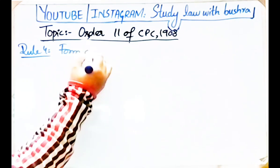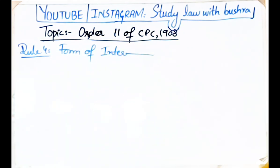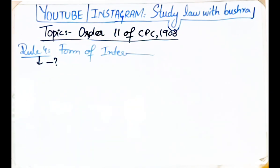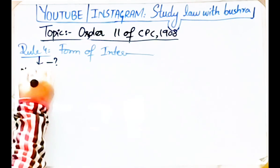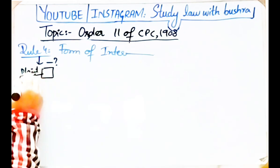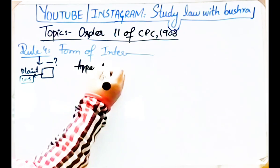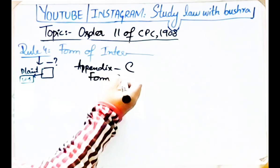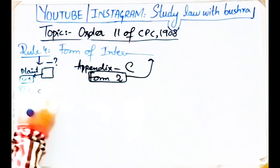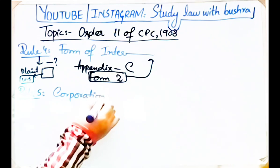Rule 4 baat karta hai form of interrogatories. Rule 4 mein kaha gaya hai ke interrogatories shall be in Form Number 2 in Appendix C with such variation as circumstances may require. CPC ke end mein jo Appendix C hai, jaise plaint ki drafting ka tarika kaar bataaya gaya hai, waise hi interrogatories ko tayyar karne ka proper tarika Rule 4 ke zariye Appendix C ke Form Number 2 mein bataaya gaya hai — usi ke according apna sawal naama tayyar karna hai.